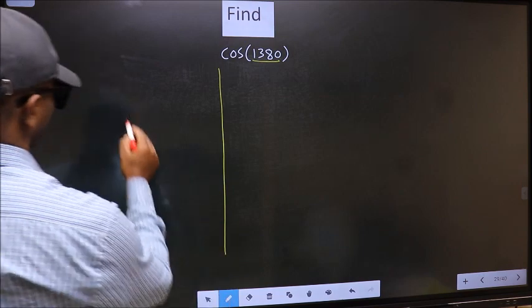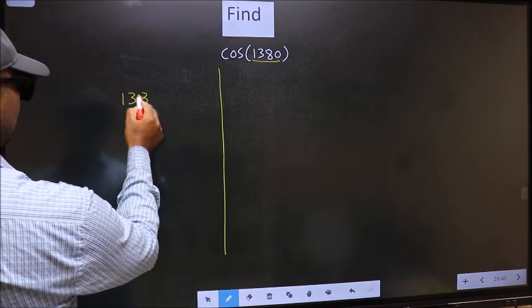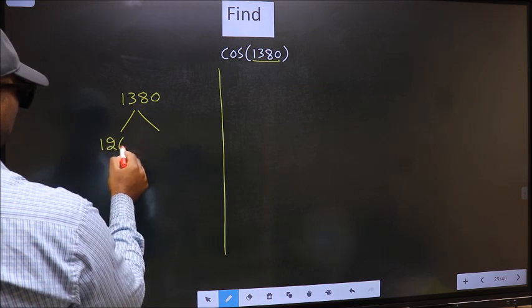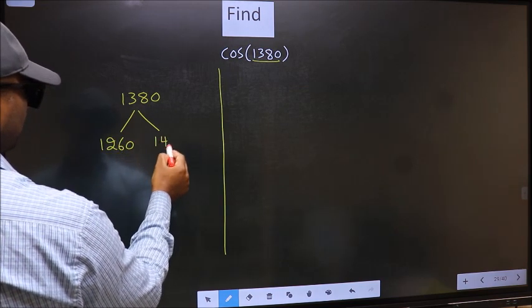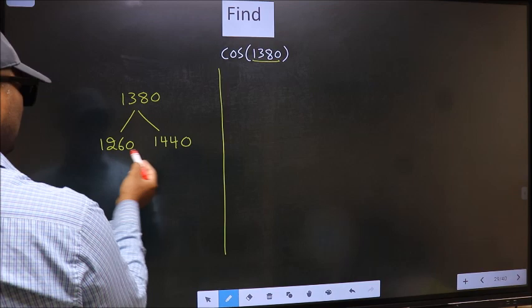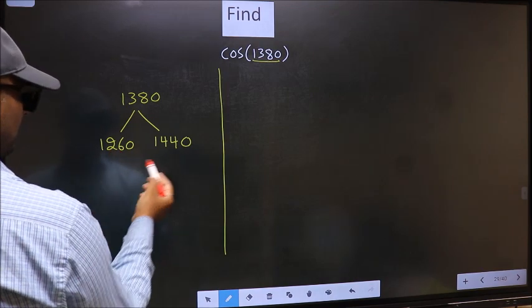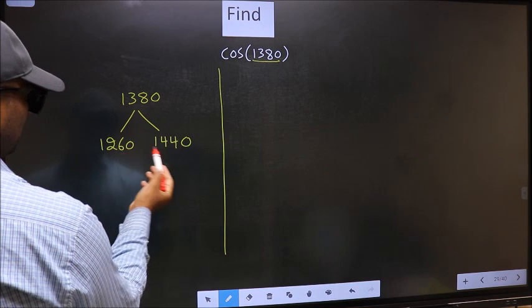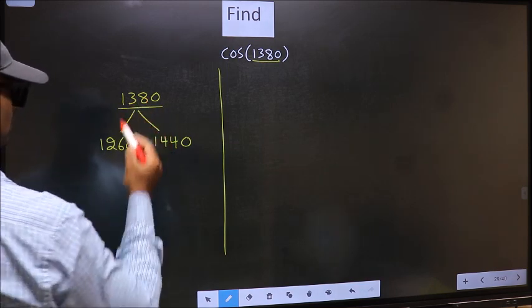Now you should check: 1380 lies between which two multiples of 180? 1380 lies between 1260 and 1440. This is 180 × 7 and this is 180 × 8. Between these two numbers, 1380 lies.